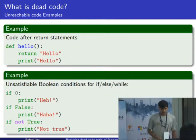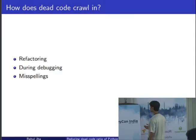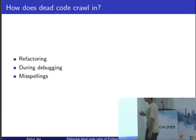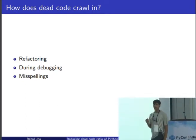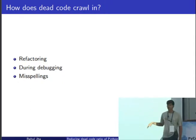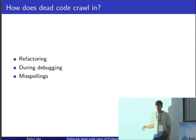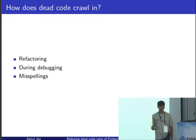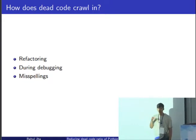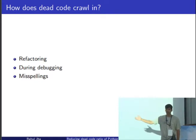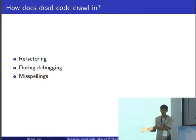Now you'll be thinking: how exactly does dead code crawl into our source program? There are multiple reasons for dead code to actually get into our source code. The first one, and the most common one, is refactoring. Let me define refactoring as changing the source code and design to do the exact same thing.